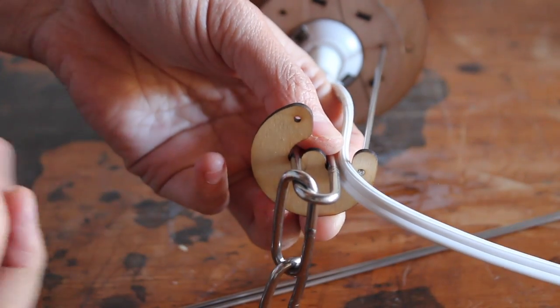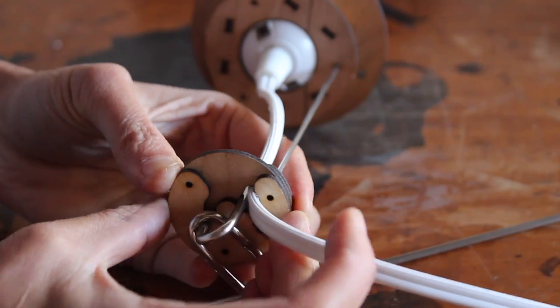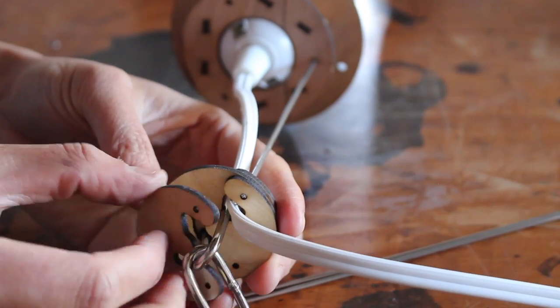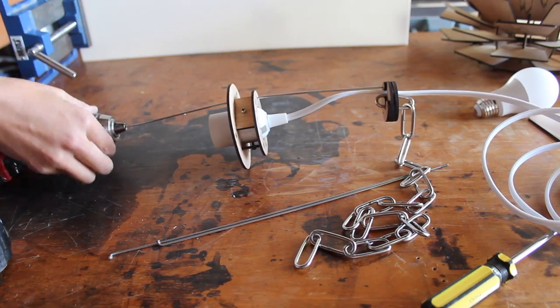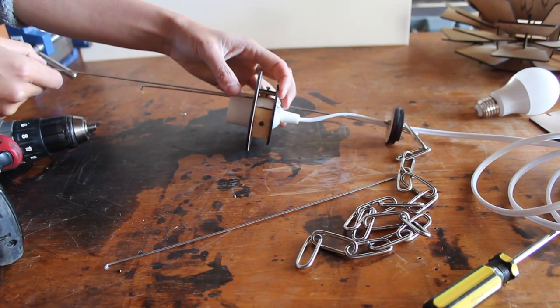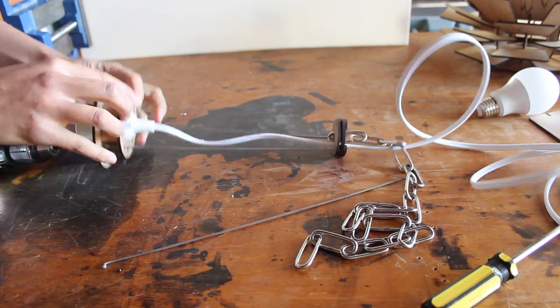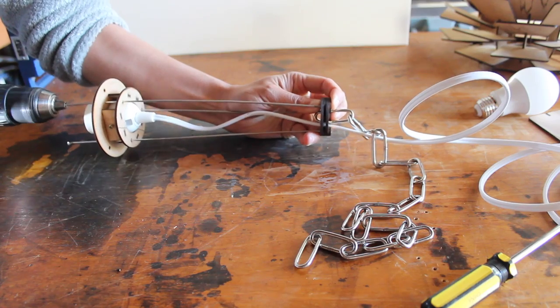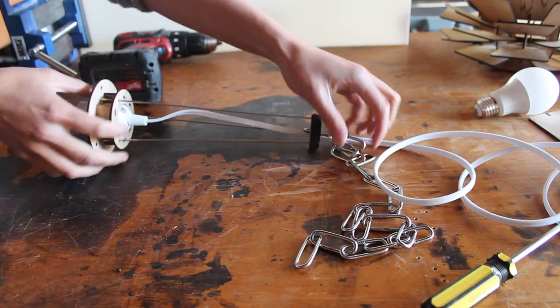These little pieces interlock to constrain the power cord and also grab onto the chain. In the end, I don't think I needed all four. Two probably would have been enough.